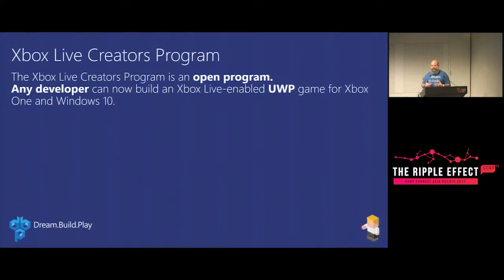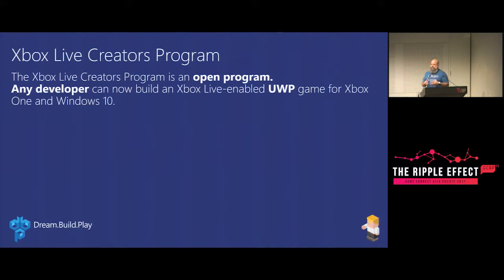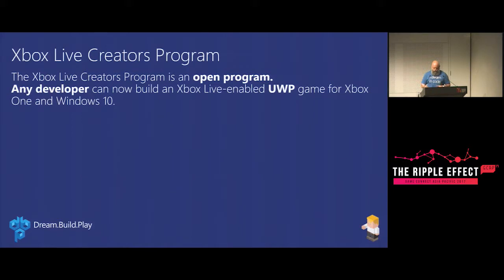The Xbox Live Creators Program is the new thing — something we announced at GDC this year, about six months ago, but only made live about a month ago. It's an open program that any developer can use to build an Xbox Live enabled UWP game for Xbox One and Windows 10. There are two things to highlight: first, for the first time, any developer can publish to Xbox One without being in a managed program or passing special certification. Second, for the first time, any developer can use a set of Xbox Live services to enhance their game.